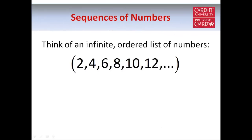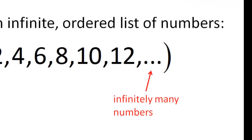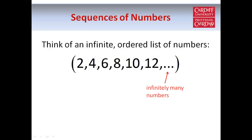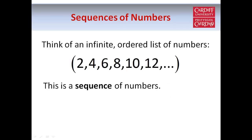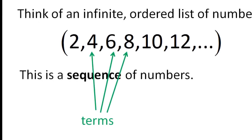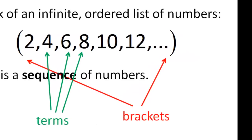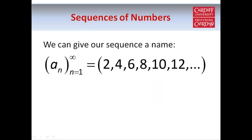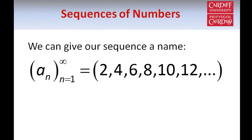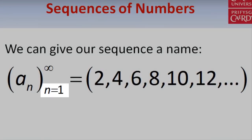Suppose we have an infinite list of numbers. The dot dot dot indicates that the list goes on forever. In this list, the order is important — this is a sequence. The numbers in the brackets are called terms of the sequence, and we usually write the terms inside brackets. We can give our sequence a name by writing it as a_n inside brackets, with n equals 1 to indicate the first term is called a_1, and infinity to make clear the sequence goes on forever.